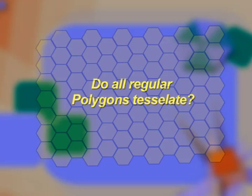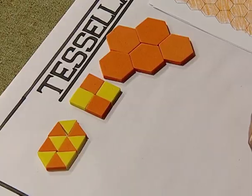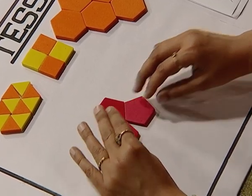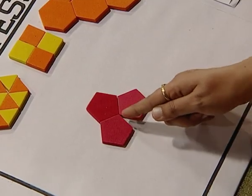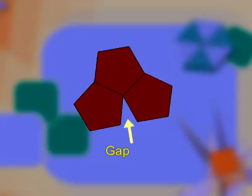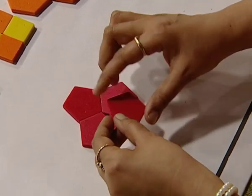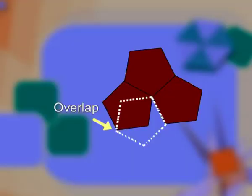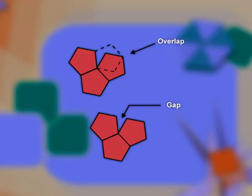After having explored these tessellations, the next natural question that arises is: do all regular polygons tessellate? Let us try to do the same thing with a set of pentagons. If we try to place these pentagons next to each other, on placing three pentagons we observe that there is a gap which is left. If we pick up a fourth pentagon to try and fill this gap, we observe that there is an overlap that occurs. Therefore, we can say that these pentagons are not tessellating.